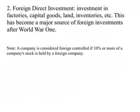The second type of international capital movement is foreign direct investment, or FDI in short. This is investment in factories, capital goods, land, inventories, etc. As far as FDI goes, a company is considered to be foreign controlled if 10% or more of company stock is held by a foreign company.